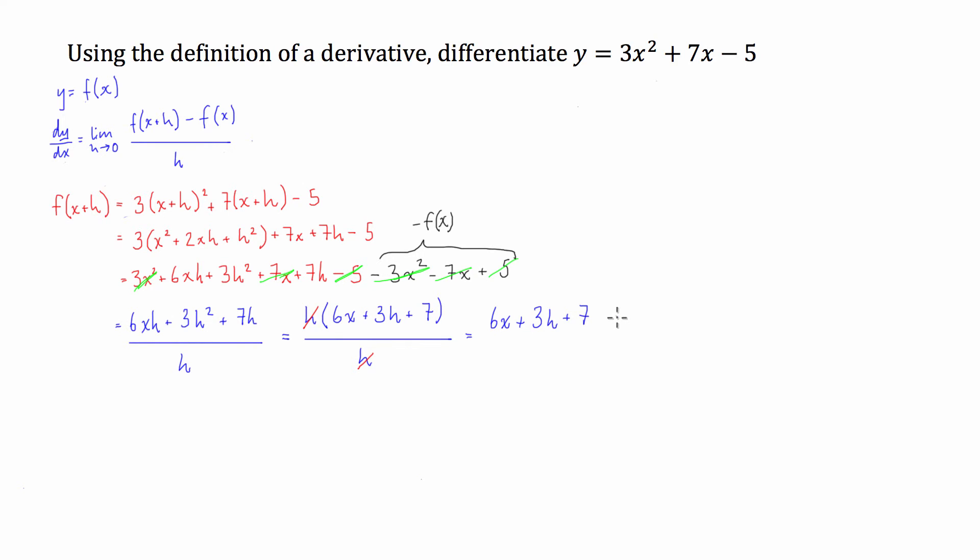And that leaves us with just 6x plus 3h plus 7. And finally, what we've got to do is take the limit as h approaches 0. So the final step to find dy/dx, we have to take the limit as h approaches 0 of 6x plus 3h plus 7.